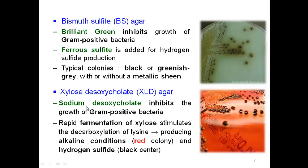In XLD agar, sodium deoxycholate can inhibit gram-positive bacteria. Salmonella can rapidly ferment xylose, so the colonies are pink with or without a black center.